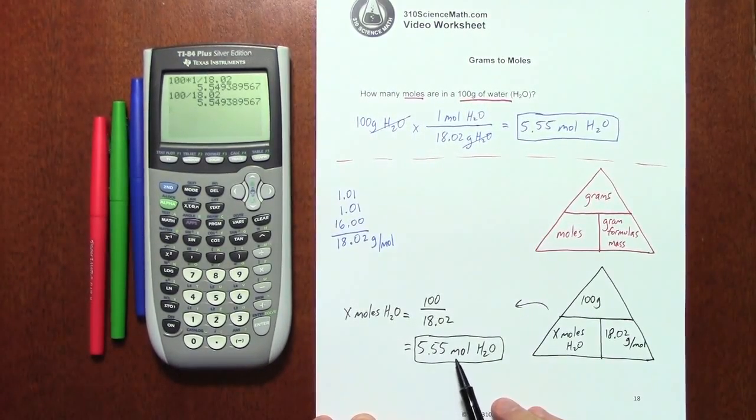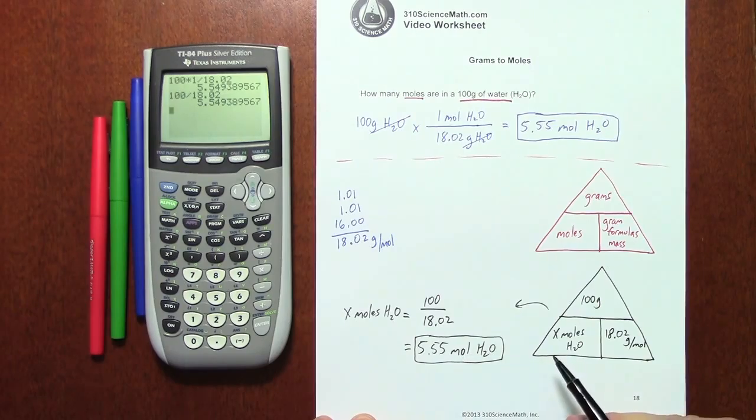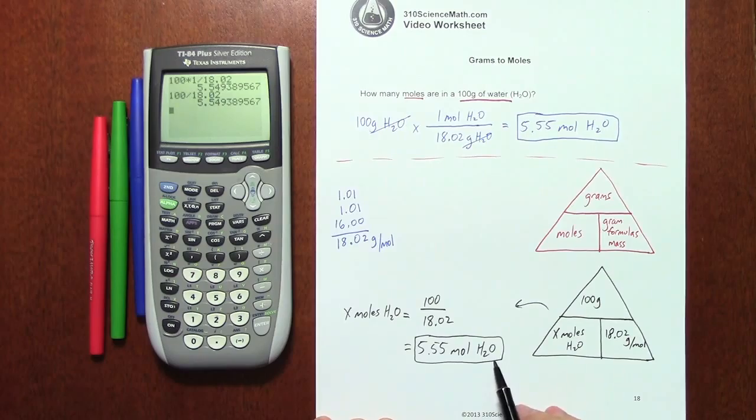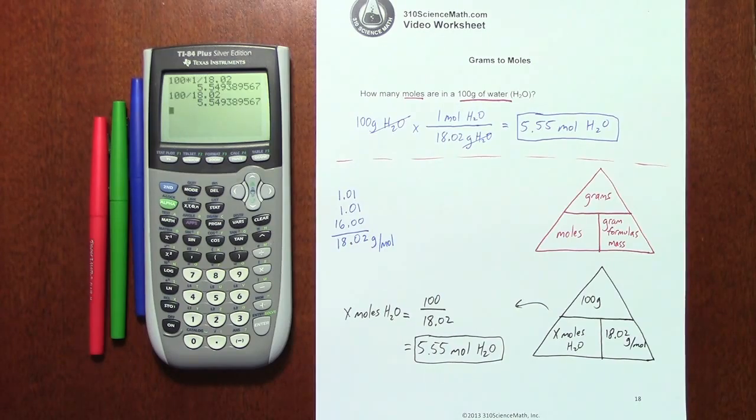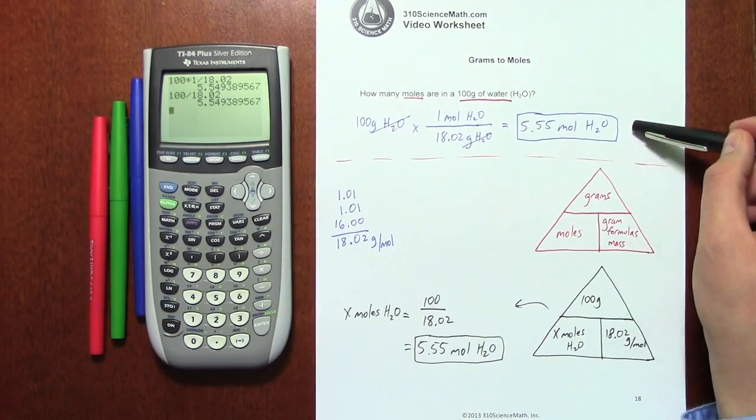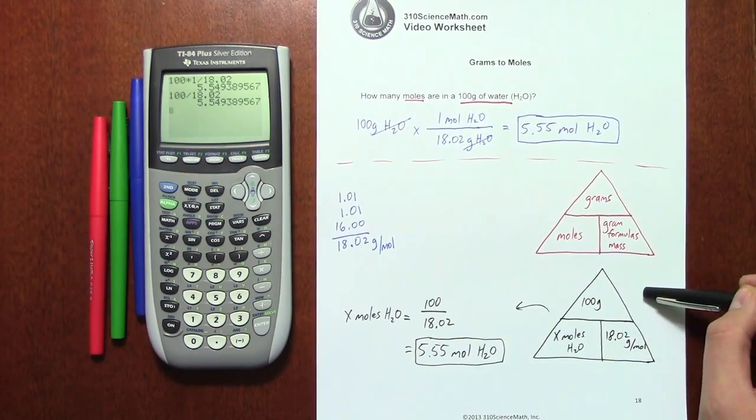You may notice that I use the abbreviation for the mole, which is M-O-L. Either way is fine. If you wanted to write moles of water, that is also acceptable. That's all I have for you in this video. Watch it again, or download the free worksheet and see if you can duplicate what I just did using either dimensional analysis or using one of these magic triangles.